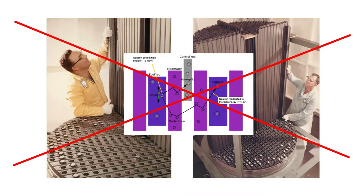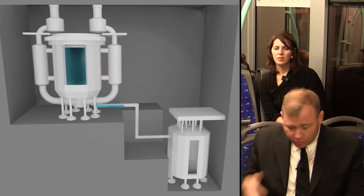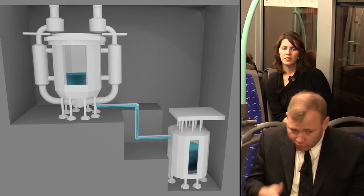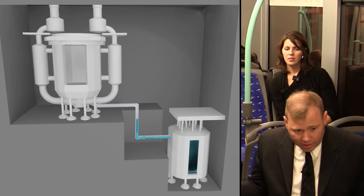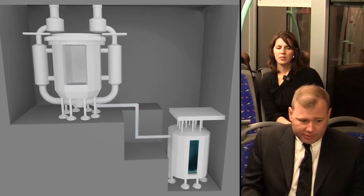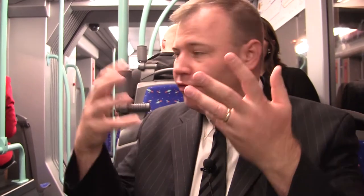The drain tank does not have any graphite in it. If something happens where that fuel drains away from that graphite, criticality is no longer possible. The reactor becomes subcritical, fission stops, and there's no way to restart it without reloading the fuel back into the core.